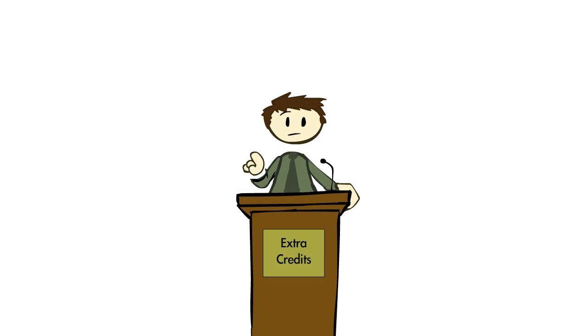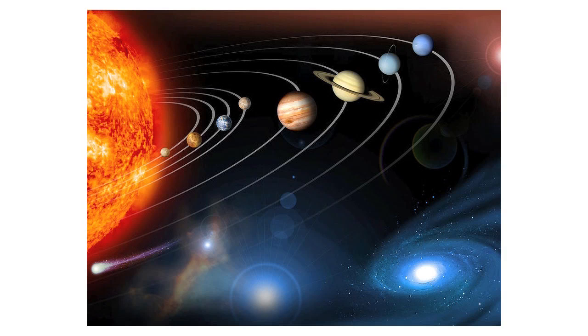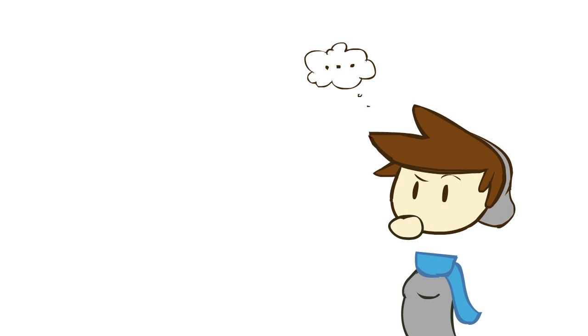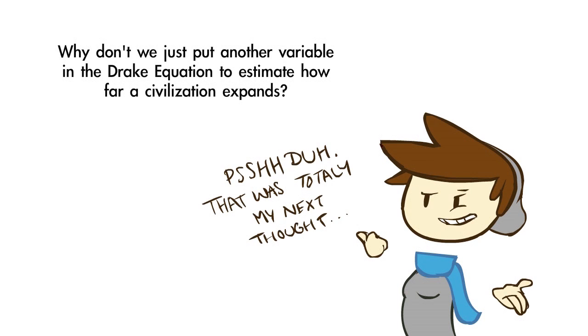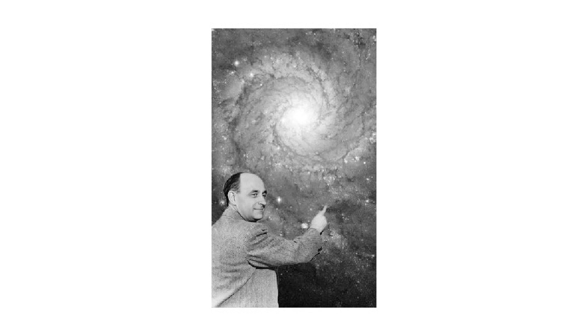But the great caveat of the Drake equation is that it only accounts for civilizations occupying a single solar system. So you're probably thinking, why don't we just put another variable in the Drake equation to estimate how far a civilization expands? But in doing so, we run headlong into the Fermi Paradox.